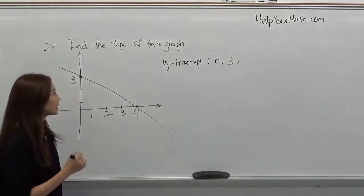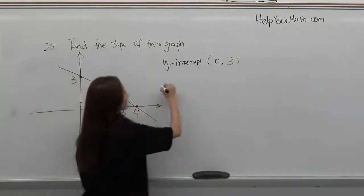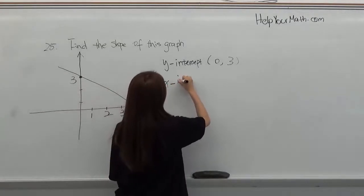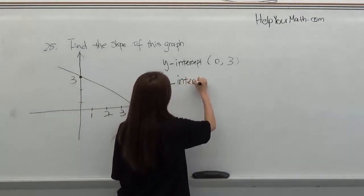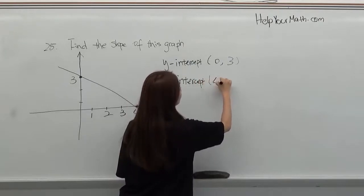And the x-intercept is at this point. So we get (4, 0).